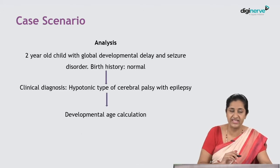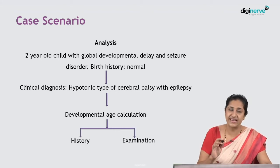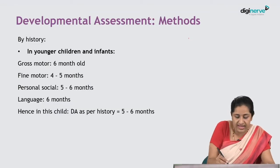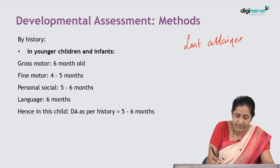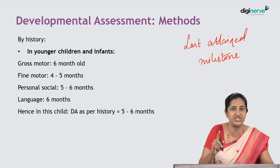How do we calculate the developmental age of this child? There are two ways of doing this. First way is through history, second is by examination. By history, in younger infants and children, we calculate using the last attained milestone in each domain — which age that last attained milestone corresponds to. In this child, the last attained milestone was rolling over, which corresponds to a developmental age of six months.